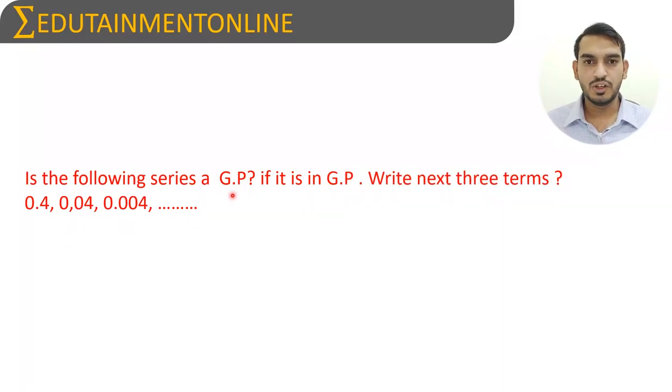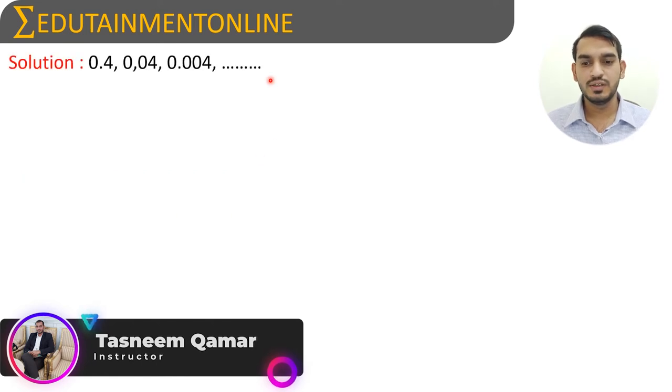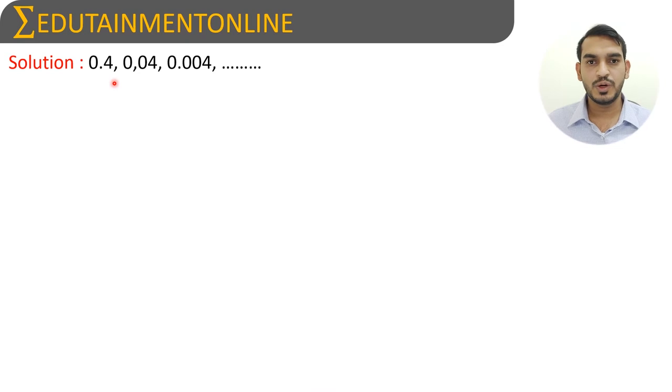Is the following series a geometric progression? If it is in geometric progression, write the next three terms. The given series is 0.4, 0.04, 0.004, and so on. Since the given series is 0.4, 0.04, 0.004, we can consider a₁, a₂, a₃.